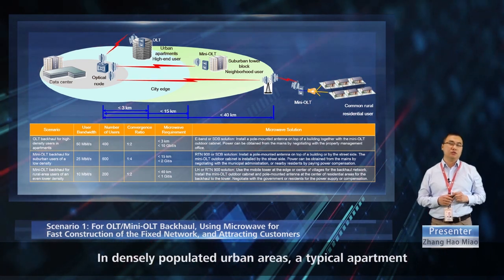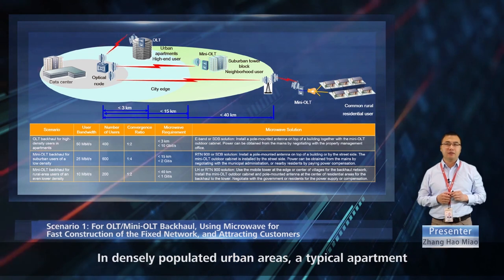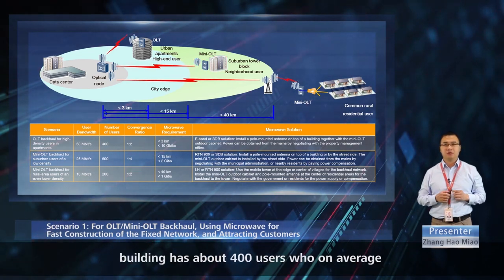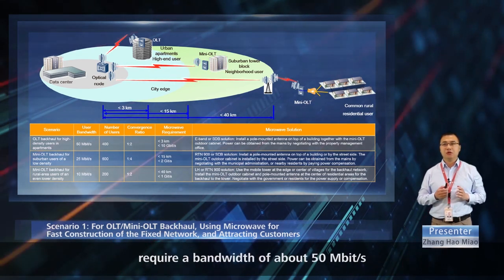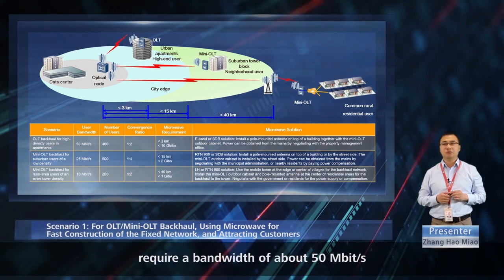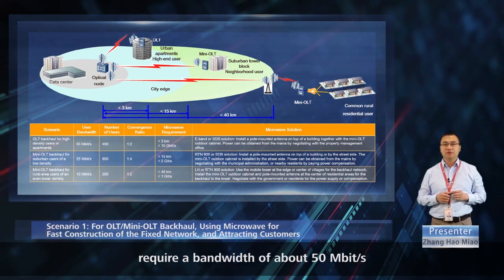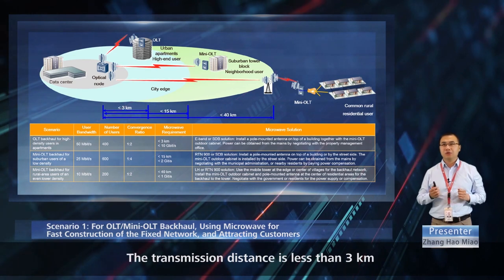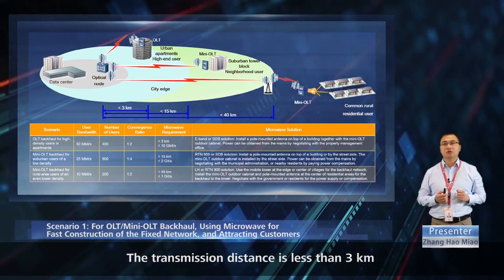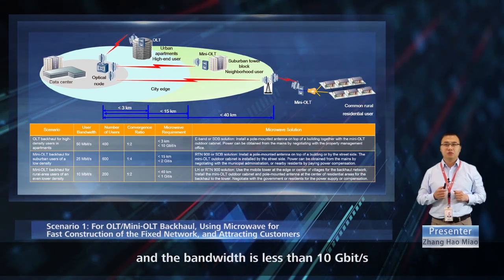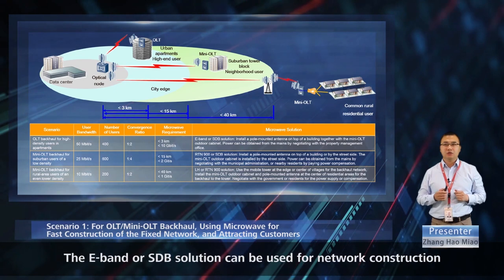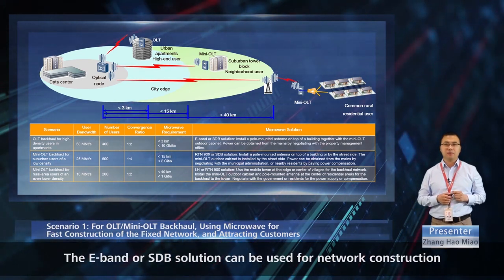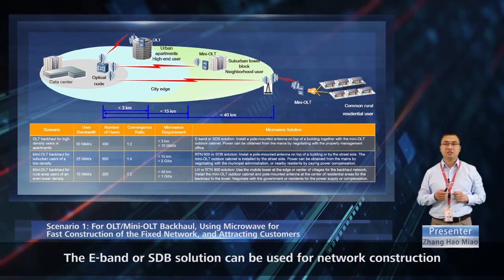In densely populated urban areas, a typical apartment building has about 400 users who on average require a bandwidth of about 50 megabits per second. The transmission distance is less than 3 kilometers and the bandwidth is less than 10 gigabits per second. The E-band or SDB solution can be used for network construction.